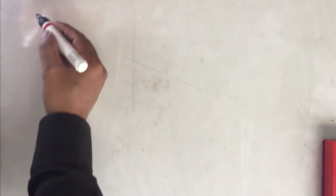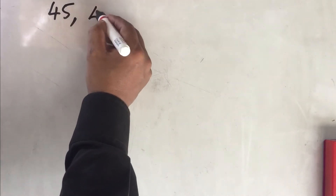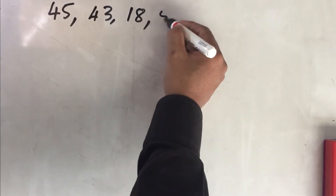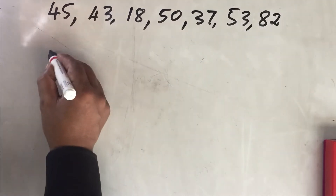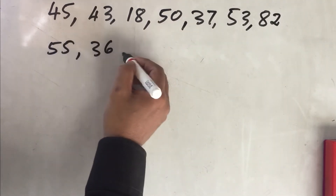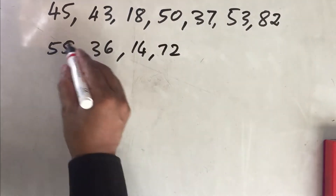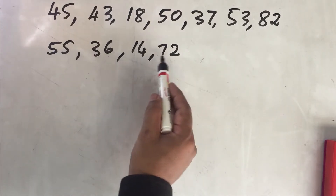Let us begin by writing the marks students have got in the last examination. Assume the scores are: 45, 43, 18, 50, 37, 53, 82, 55, 36, 14, 72 — so 11 data points. This is a very random arrangement of data.